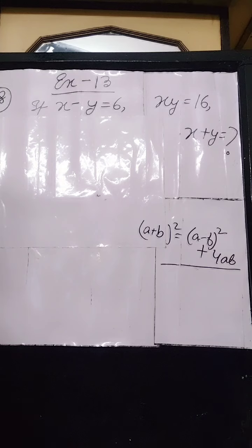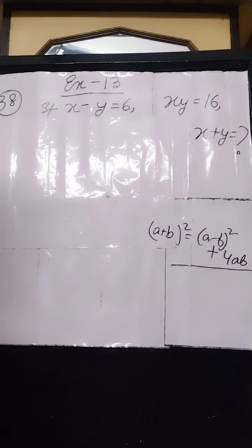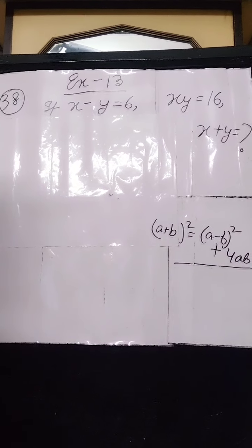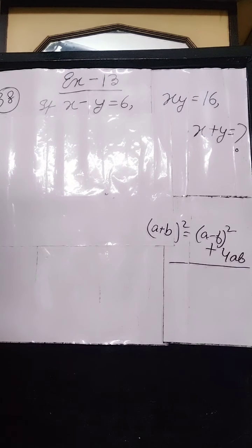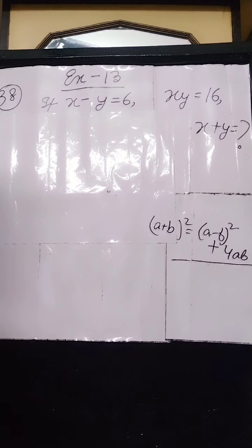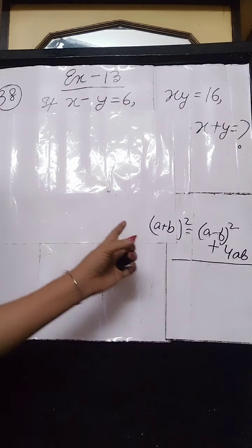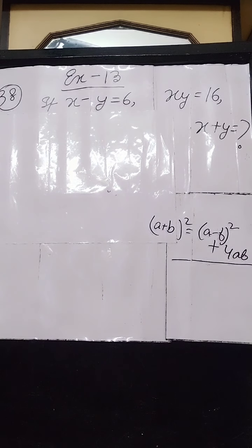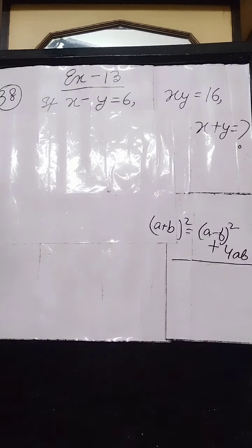Today I will start solving with sum number 38, as you can see. I have written sum number 38 from exercise 13 and will solve it first. A variety of sums are given where you have to apply the formula of (A+B)² and (A-B)².